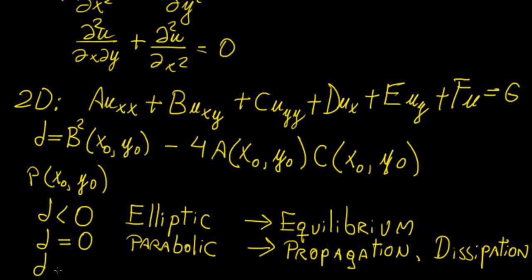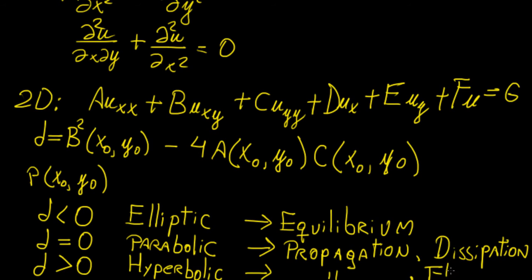The third case is when the discriminant is greater than zero — we call the PDE hyperbolic. This also relates to propagation, but can also be used for modeling fluid flow. Remember we're not taking into account the time part here; we could also have a time-dependent 2D PDE, and in that case these definitions still apply but with a little more complication.